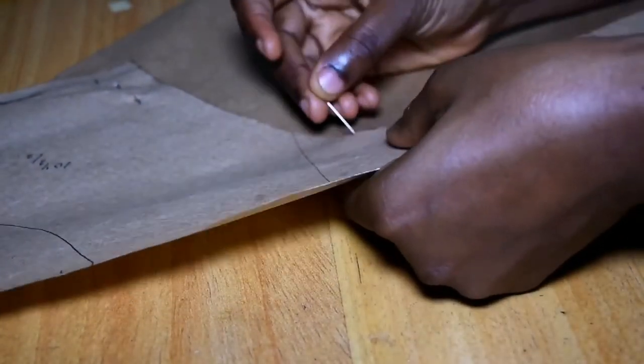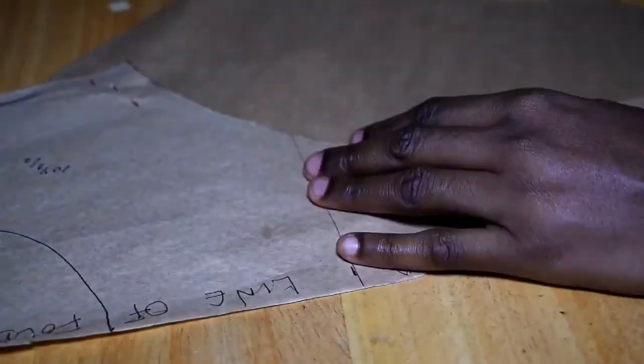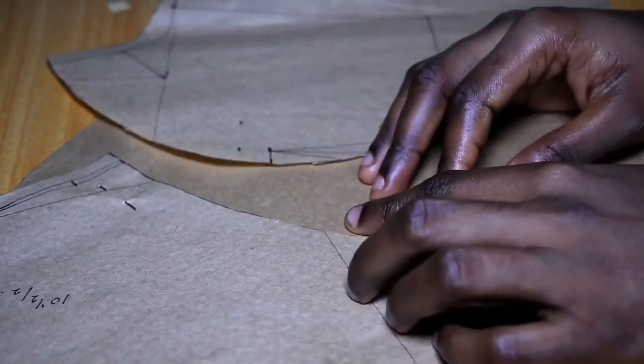So what we are going to do here is to draw out the half inch extra allowance that we added.